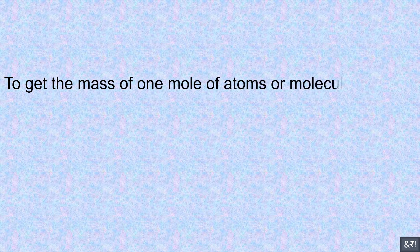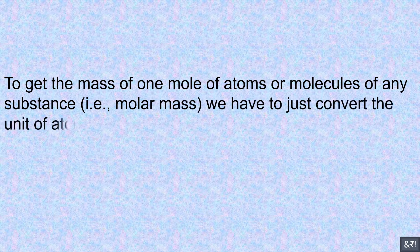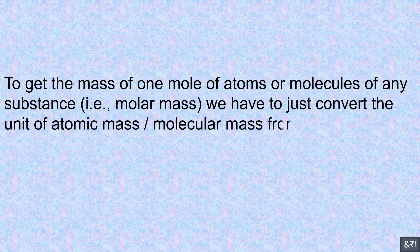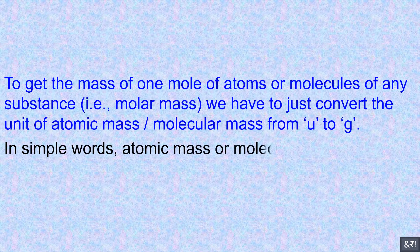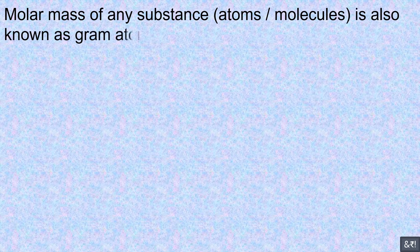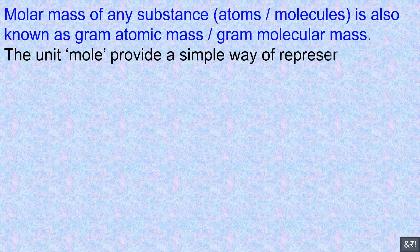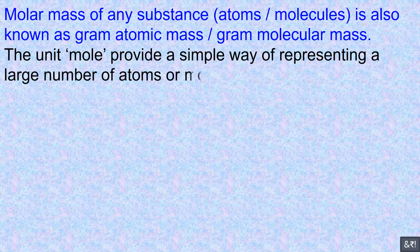To get the mass of one mole of atoms or molecules of any substance, that is molar mass, we have to just convert the unit of atomic mass or molecular mass from U to grams. In simple words, atomic mass or molecular mass expressed in grams is called a mole. Molar mass of any substance — atoms or molecules — is also known as gram atomic mass or gram molecular mass.